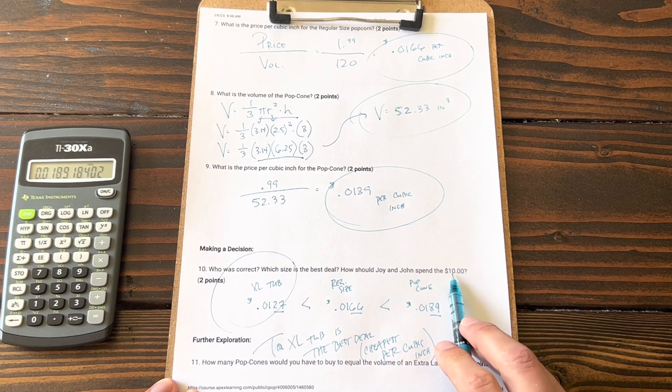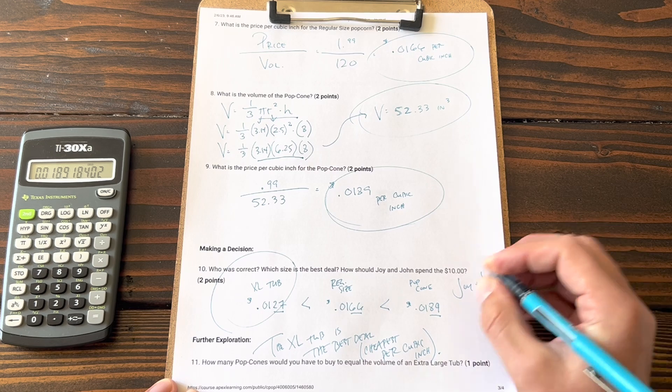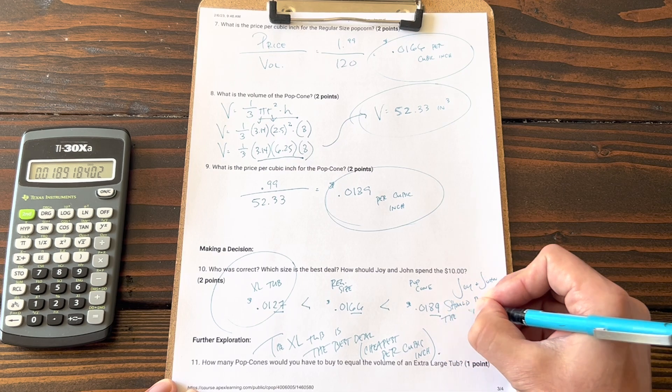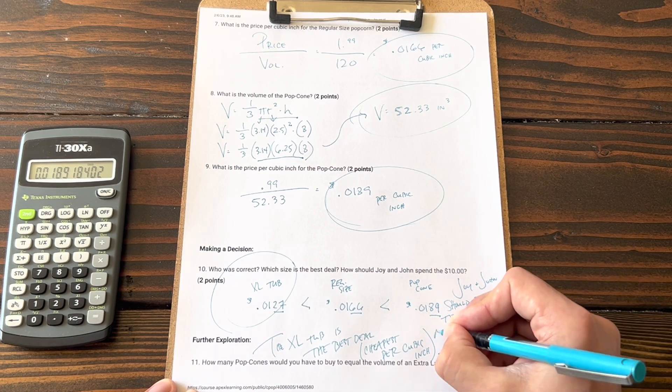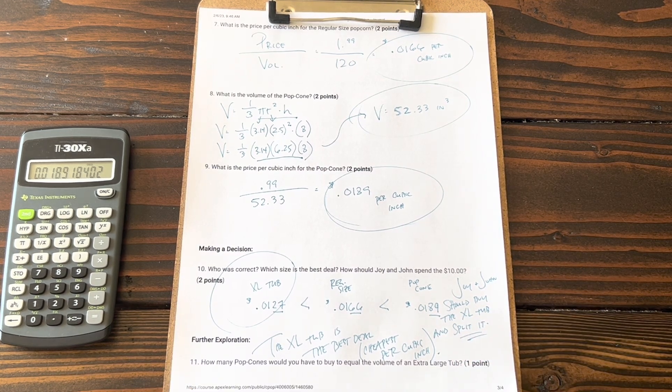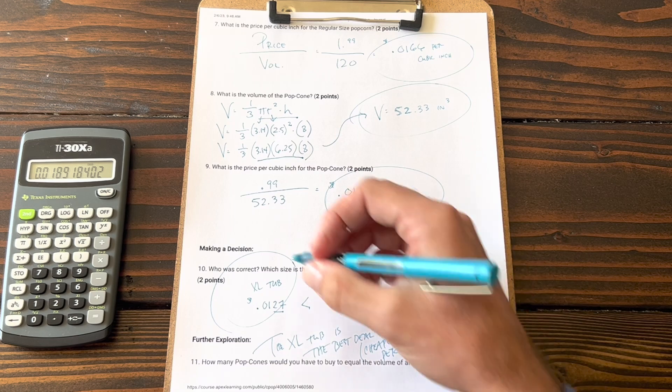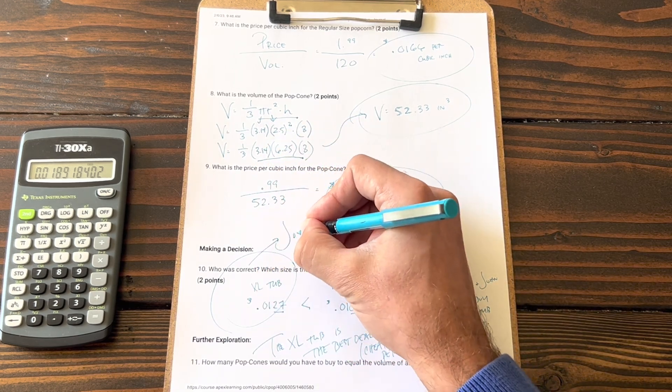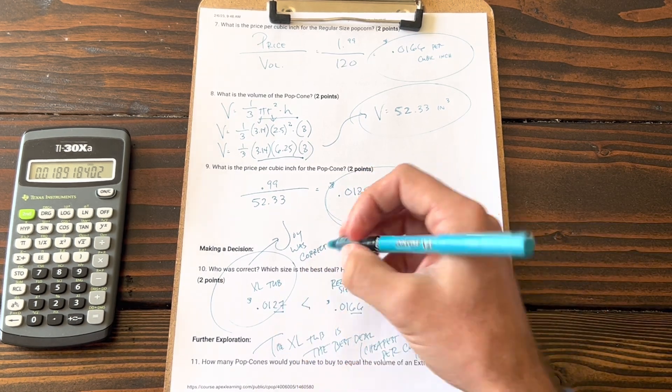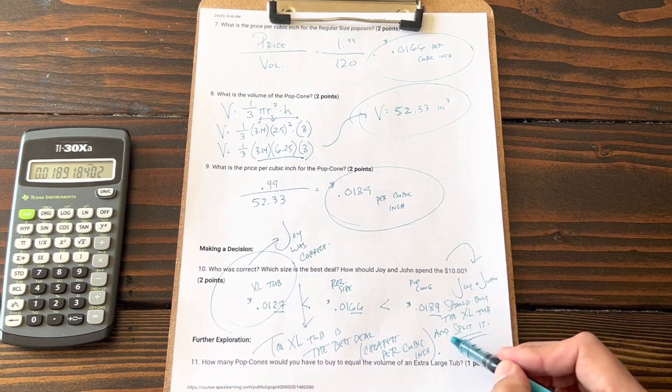How should Joy and John spend the $10? Joy and John should buy the XL tub and split it. Who was correct? Joy was correct. Which size is the best deal? The XL tub is the best deal. How should they spend the money? They should buy the XL tub and split it.